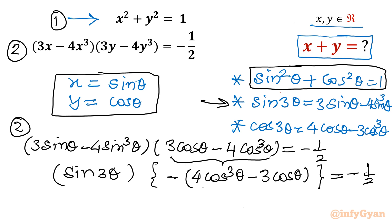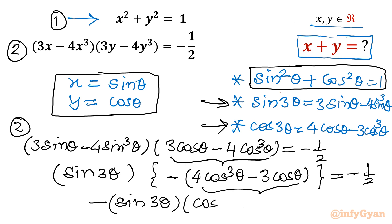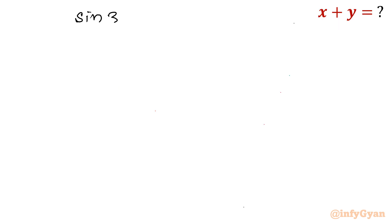The RHS is minus one half. That bracket can now be written using the cos 3-theta identity. So ultimately this becomes sin 3-theta times minus cos 3-theta equals minus one half. Multiplying both sides by minus 1, the equation becomes sin 3-theta times cos 3-theta equals one half.